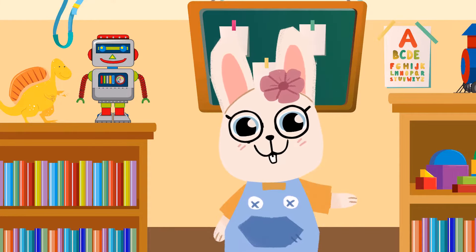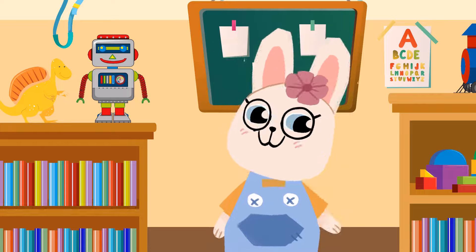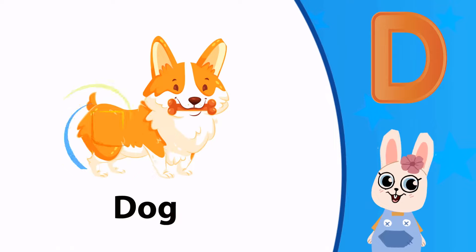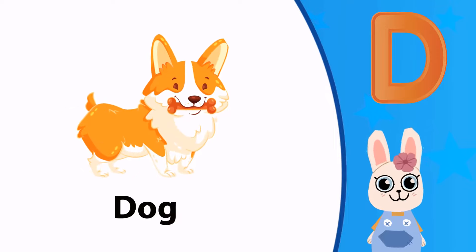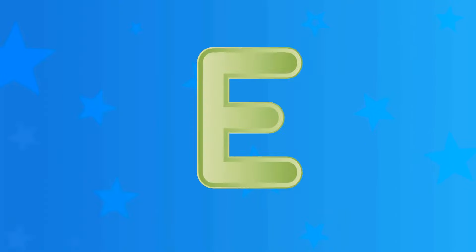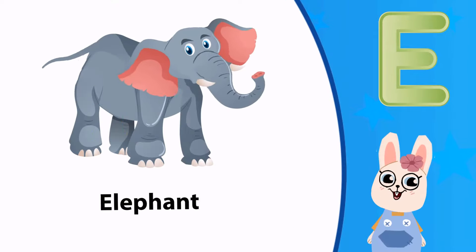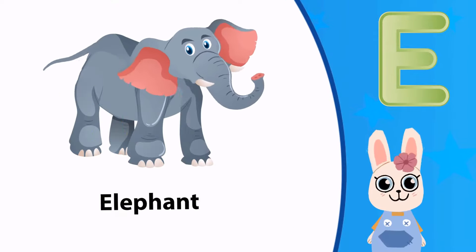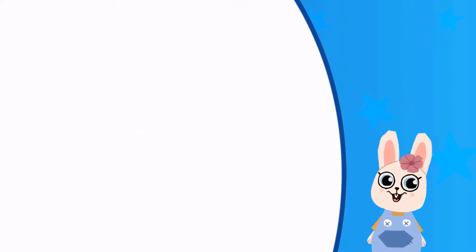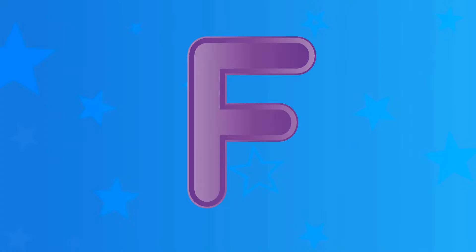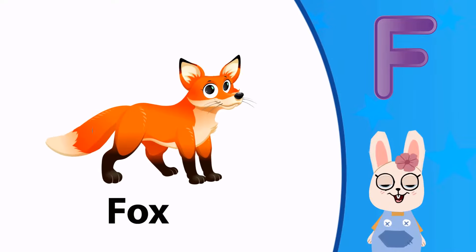Are you ready now? D. D is for dog. E. E is for elephant. And F. F is for fox.